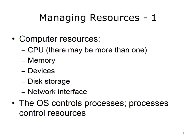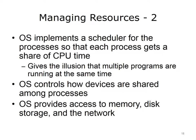Computer resources to be managed include the Central Processing Unit, or CPU — and there may be more than one — the Random Access Memory, or RAM, devices, secondary storage or disk storage such as the hard drive, and a network interface. The operating system controls processes that in turn control resources. The OS implements a scheduler for sharing the CPU's time so that each process gets a fair share. It gives the illusion that multiple programs are running at the same time, even if there are more processes than CPUs. Each process gets a small chunk of time per turn, and the processes are switched so quickly as to be barely noticeable.